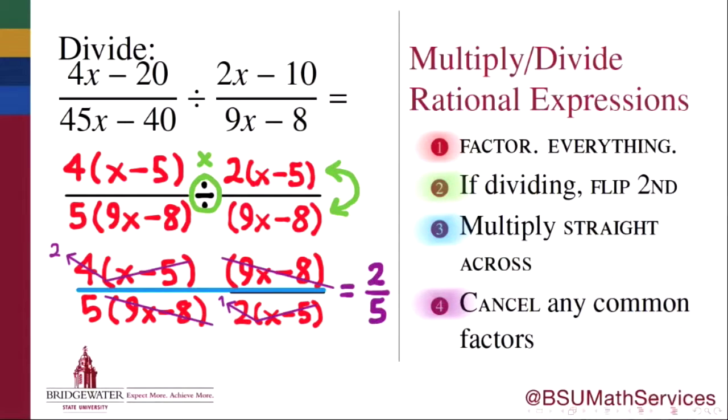This is not something that will always happen. It's more typical that our final answer will still have variables in it. But in this example, there were so many factors that were common in both the numerator and denominator that after all the common factors were cancelled, all of our variables ended up disappearing, leaving us with the numerical fraction 2 fifths.